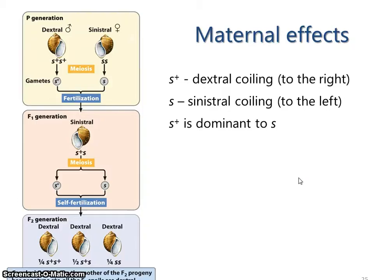Individuals that are homozygous recessive have sinistral coiling, and individuals that are coiled to the right are dextrally coiled. Let's say that these two individuals mate and produce a heterozygous offspring. The thing about these snails is that they're hermaphrodites, so they produce both eggs and sperm.